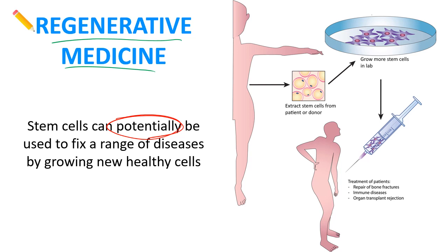A typical example: we extract stem cells from the patient — ideally the same patient, so they have the exact same genetics and there aren't any issues with donor cell rejection. Then we grow the cells in the lab to build up a big supply. We inject the stem cells into the area that needs repairing, and hopefully those stem cells start to divide and make brand new cells to repair the damage — for example, cells in someone's spine, or red and white blood cells for immune diseases.